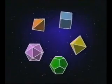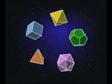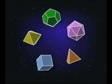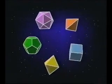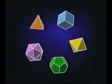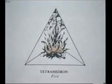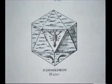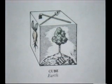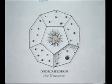The perfection of the Platonic solids led Plato to write that they must represent the elements thought at that time to make up the world. The tetrahedron was fire, the octahedron air, the icosahedron water, and the cube earth. The fifth solid, the dodecahedron, represented the universe itself.